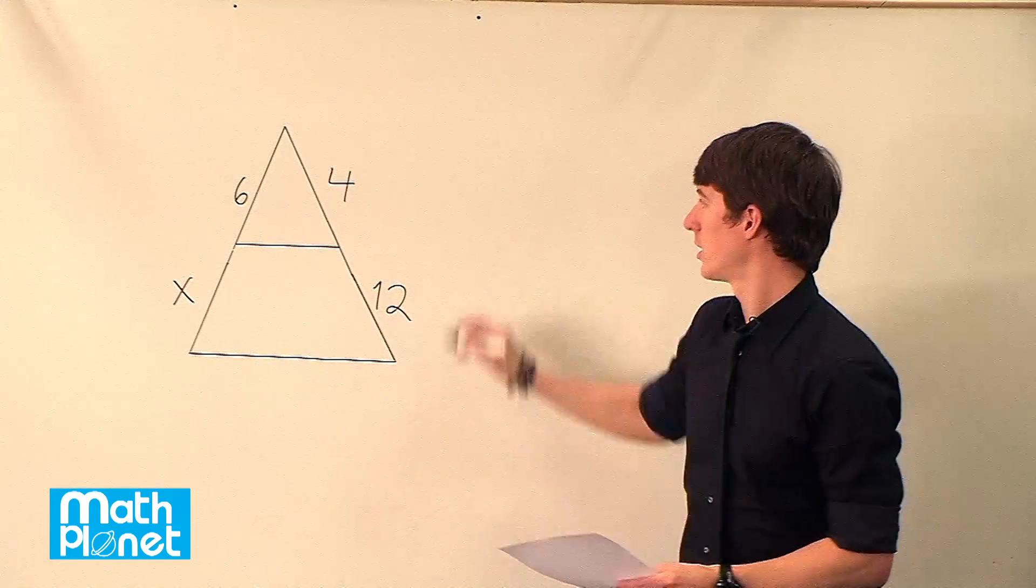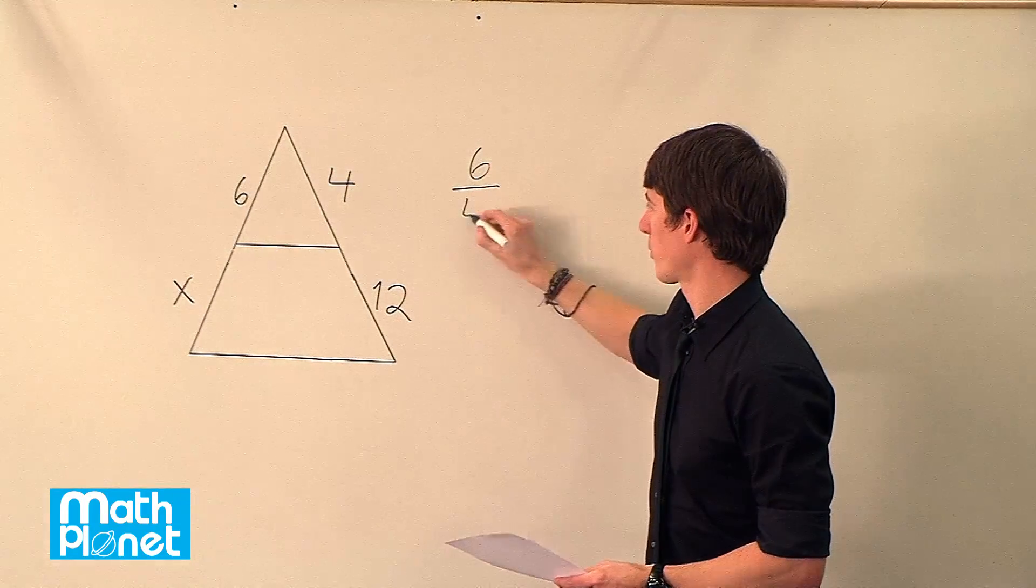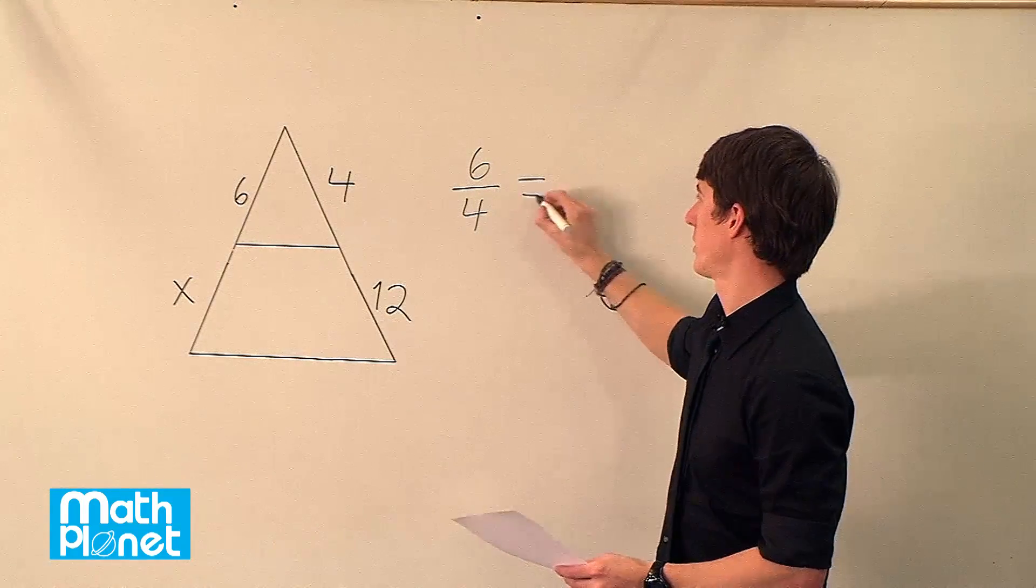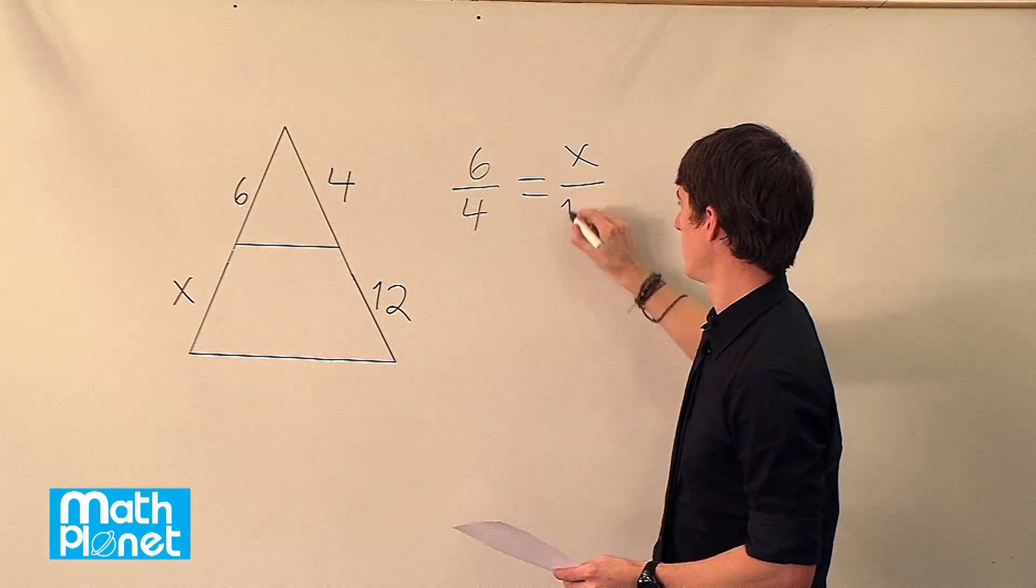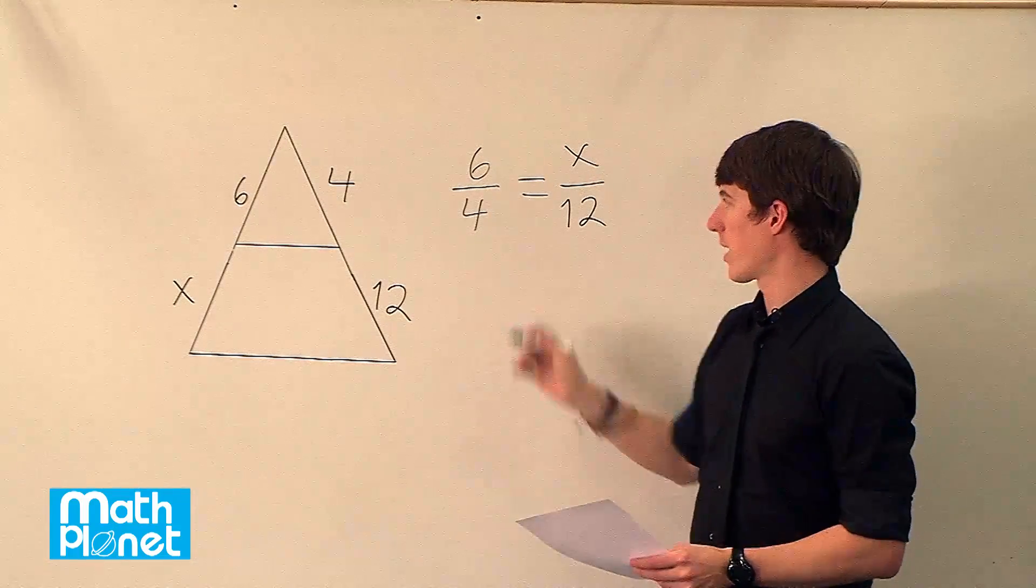They're right on top of each other. So if we say 6 to 4, or 6 fourths, equals x over 12, then we can simply solve for x and we have our answer.